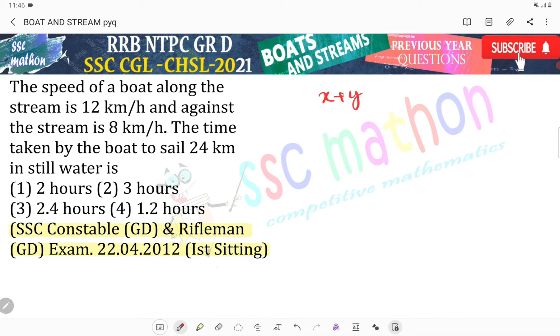Along speed is x plus y, where x is the boat's speed and y is the stream's speed. x plus y is given as 12 km per hour, x minus y is given as 8 km per hour.